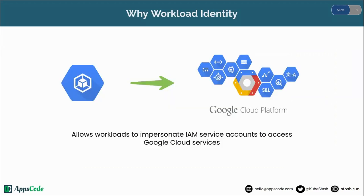Now let's see why we need Workload Identity and how to set it up. Workload Identity allows workloads in your GKE clusters to impersonate Identity and Access Management (IAM) service accounts to access Google Cloud services. This feature enables Stash to backup data to Google Cloud Storage without any explicit credentials.